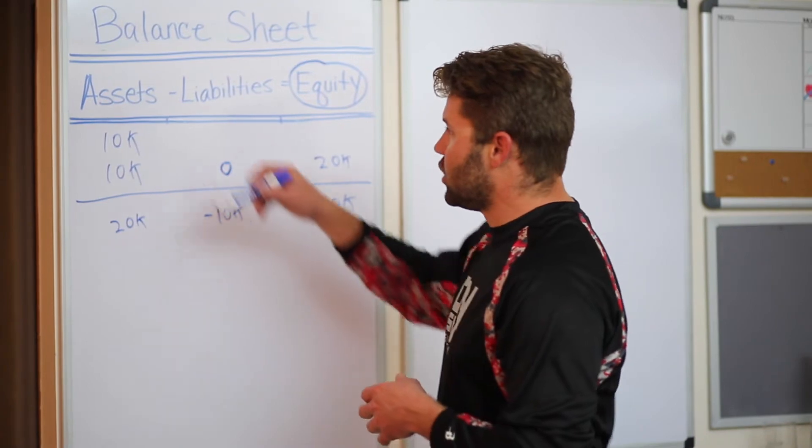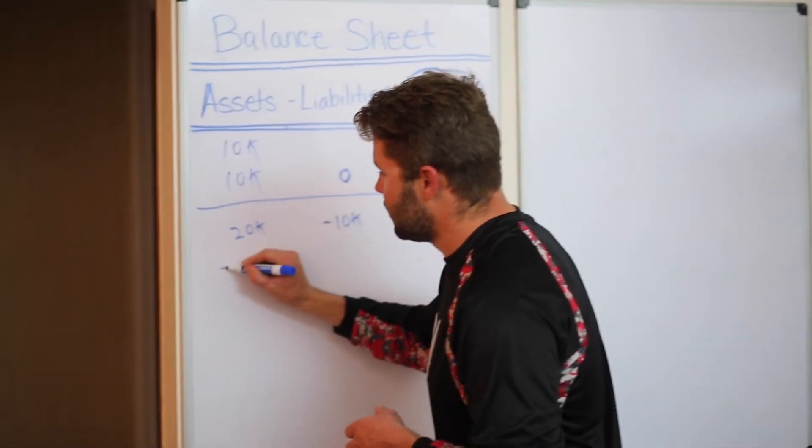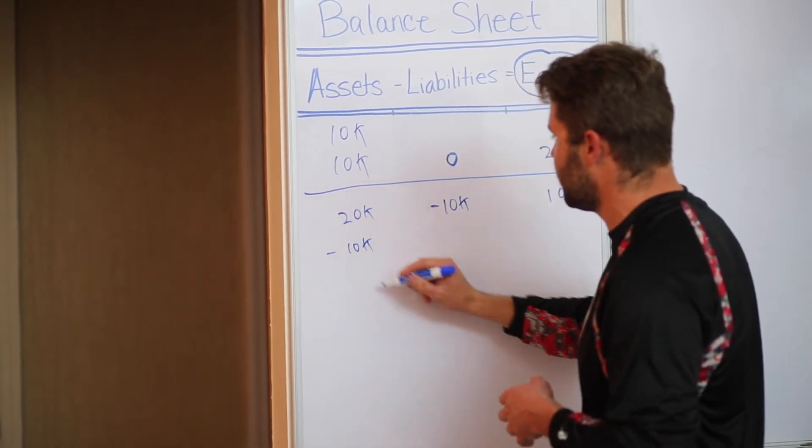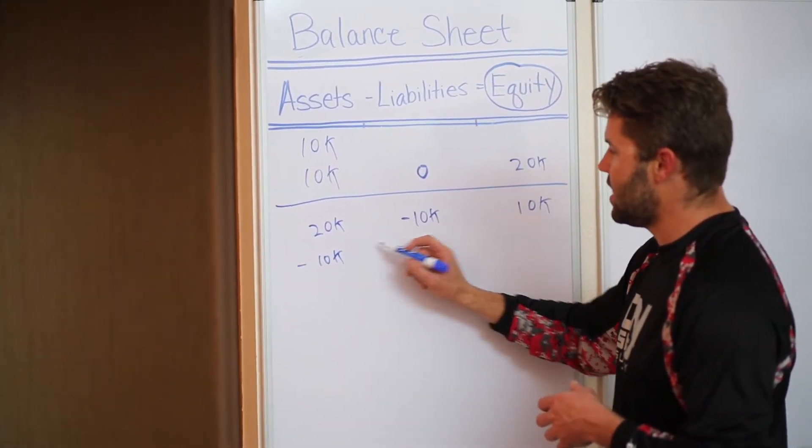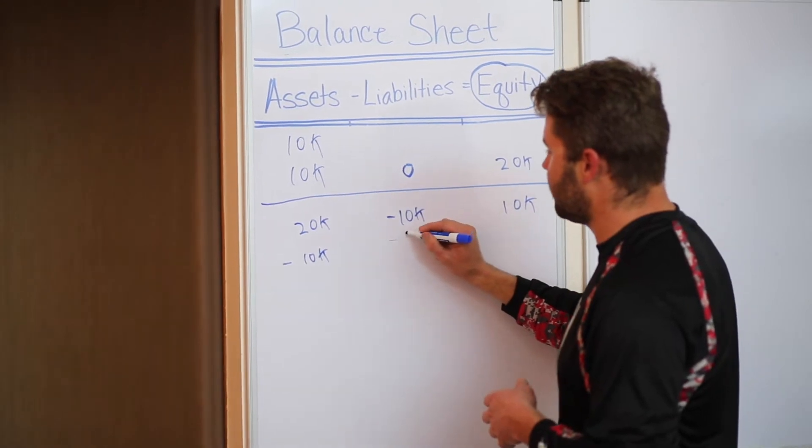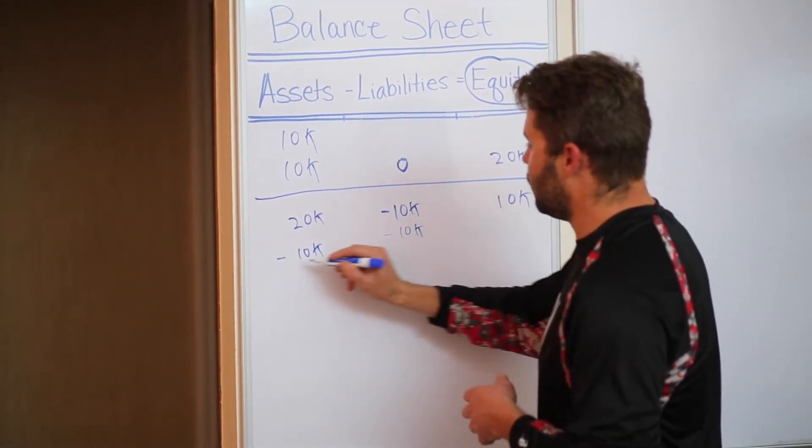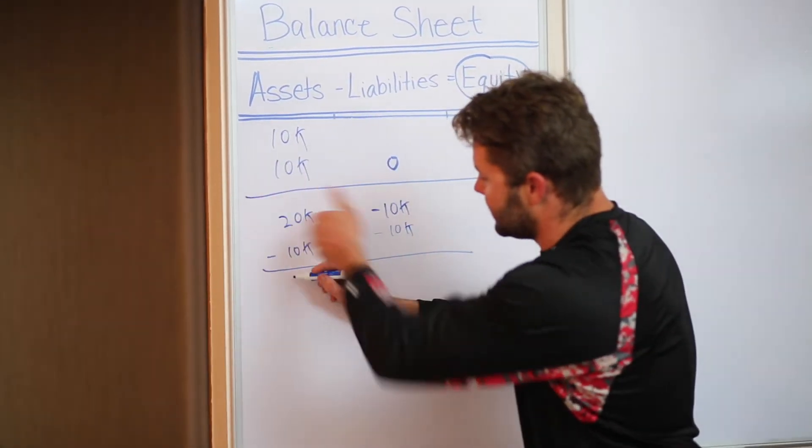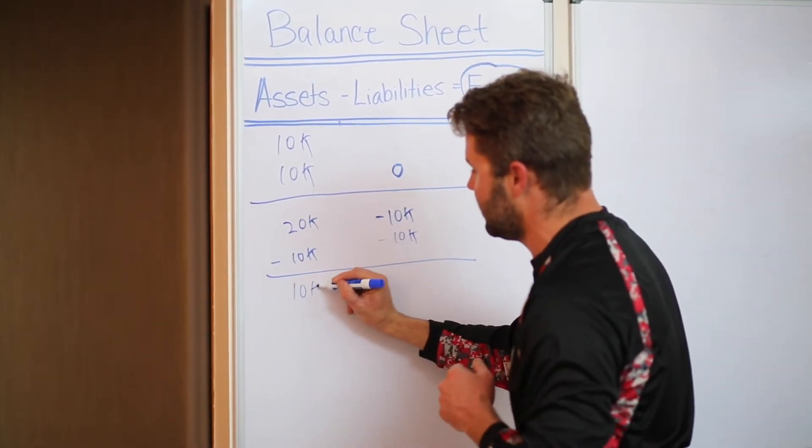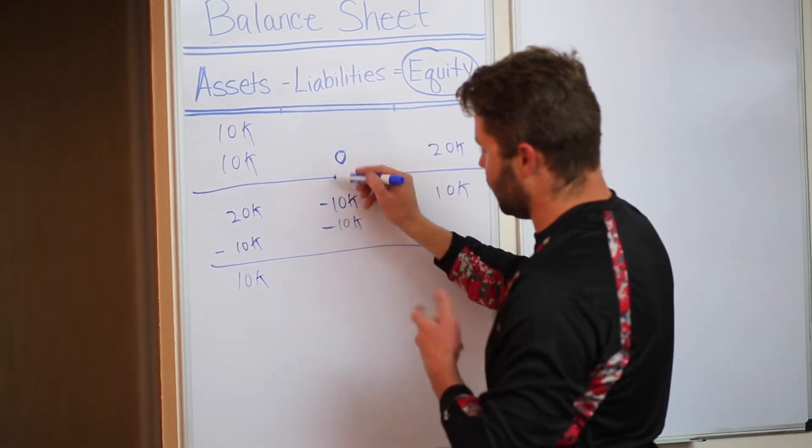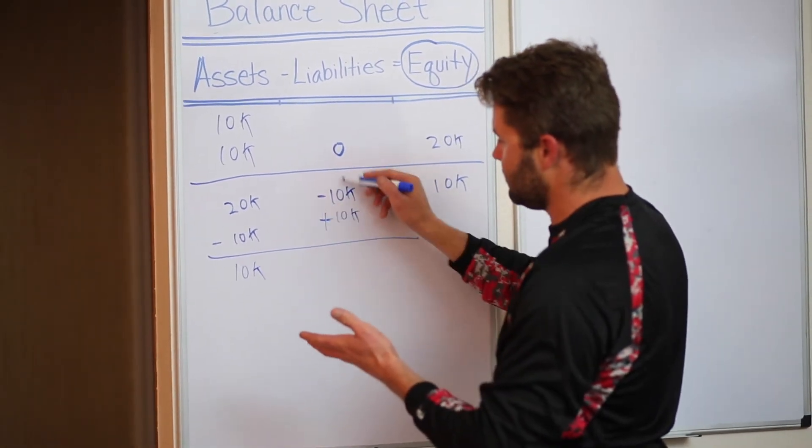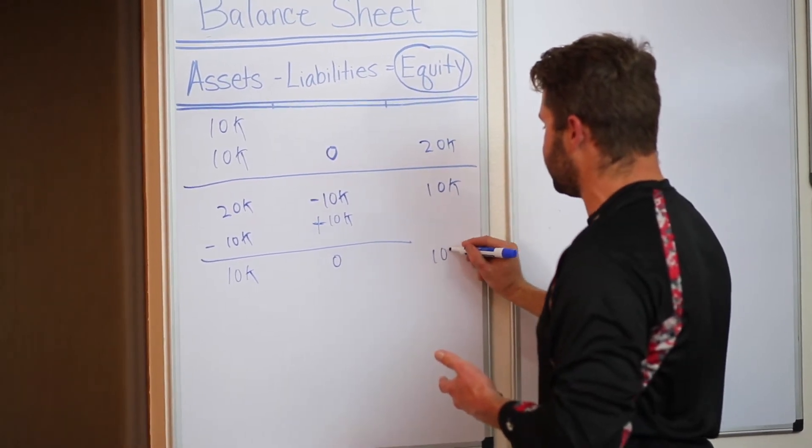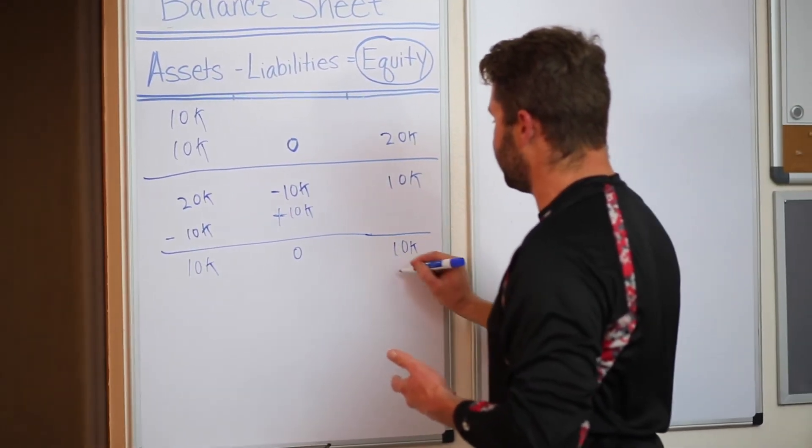So what we're gonna do is decrease assets. We're gonna decrease the assets by $10,000. We're going to liquidate those assets and pay it off which will essentially zero us out. So our assets are gonna go down to $10,000. Our liabilities are going to zero out and in our equity column we now have $10,000 worth of new customers.